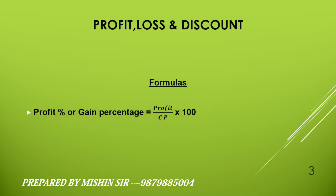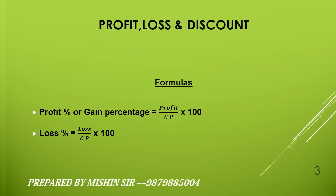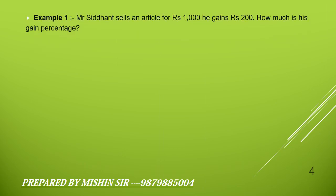Profit percent, or gain percentage, is equal to profit upon cost price, multiplied by 100. Loss percentage is equal to loss upon cost price, multiplied by 100. Now we apply the formula — Example 1.